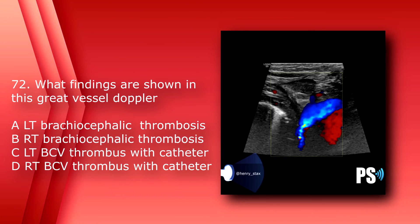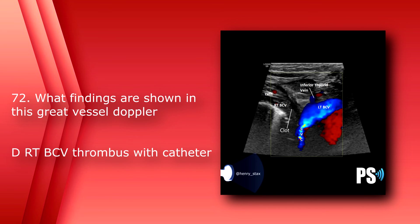Number 72: What findings are shown in this great vessel Doppler? A) left brachiocephalic thrombosis, B) right brachiocephalic thrombosis, C) left brachiocephalic thrombosis with catheter, or D) right brachiocephalic thrombosis with catheter. The answer is D, right brachiocephalic thrombosis with catheter.